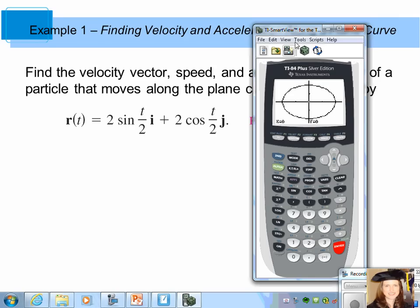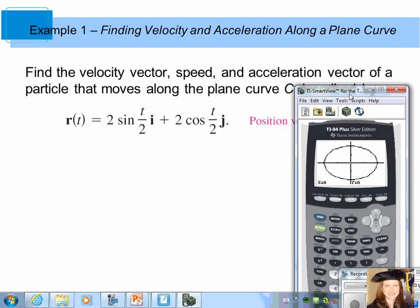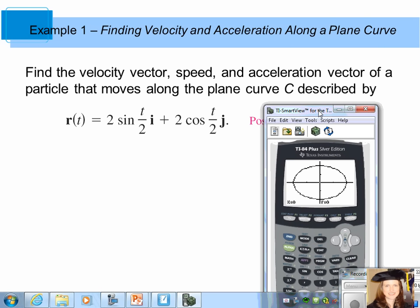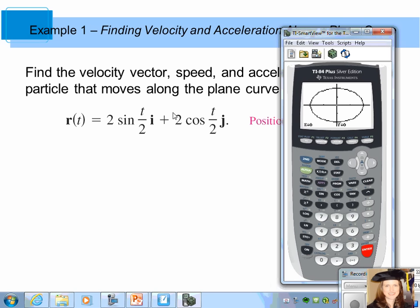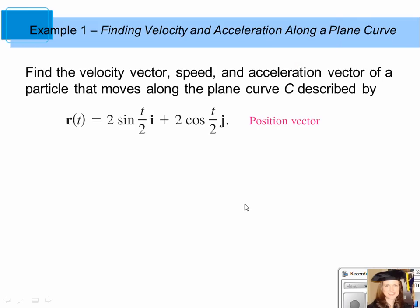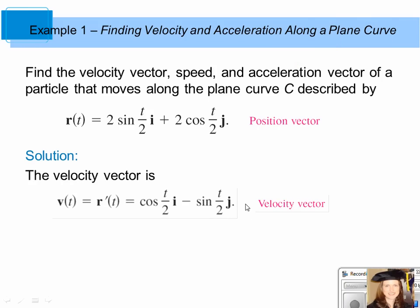We want to find the velocity vector, the speed, and the acceleration vector of a particle that moves along the plane curve C as described by this vector-valued function. Here is our position vector. The velocity vector is found by taking the derivative of each component. The derivative of 2 sine of t over 2 is cosine of t over 2, and the derivative of 2 cosine t over 2 is negative sine of t over 2. That's our velocity vector, and in general, for any time t, we plug t into this velocity vector-valued function.